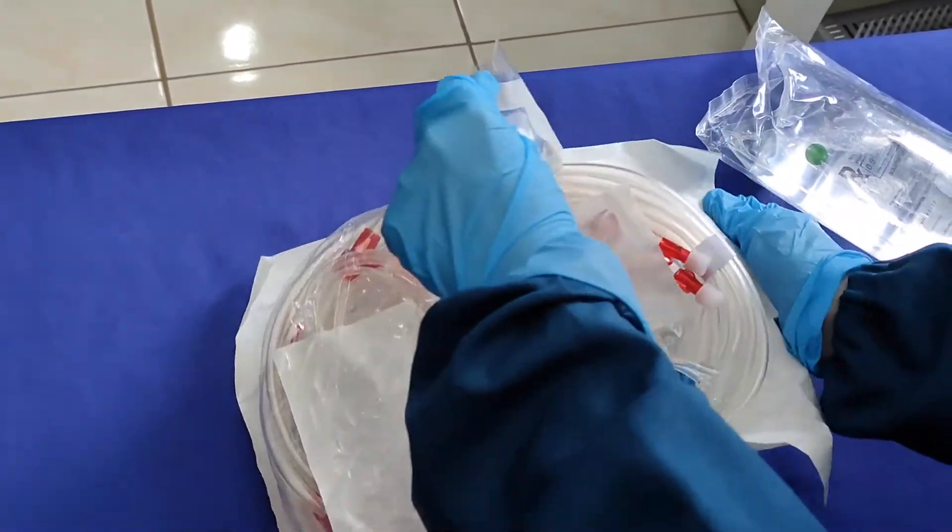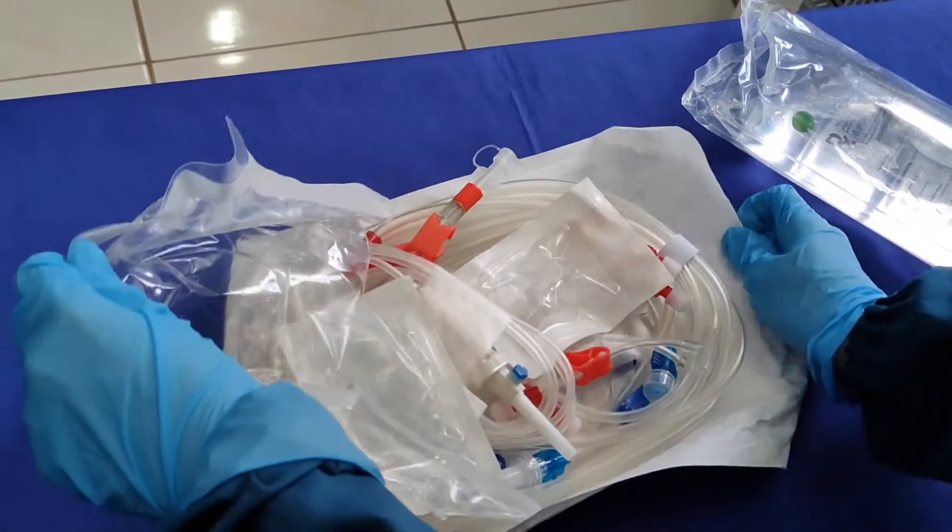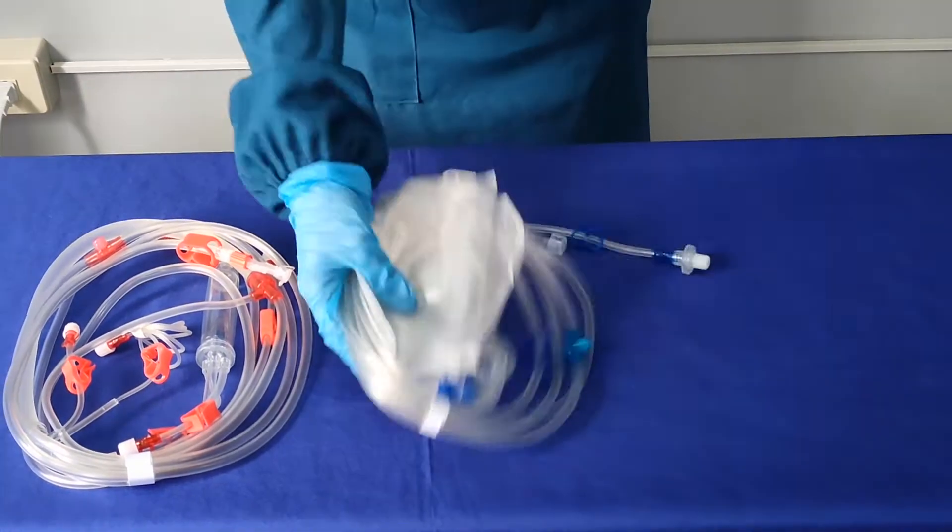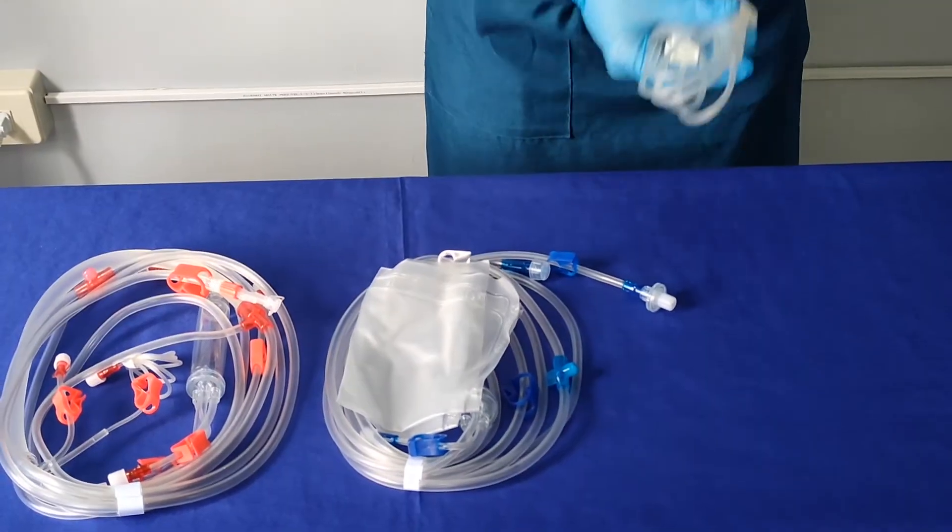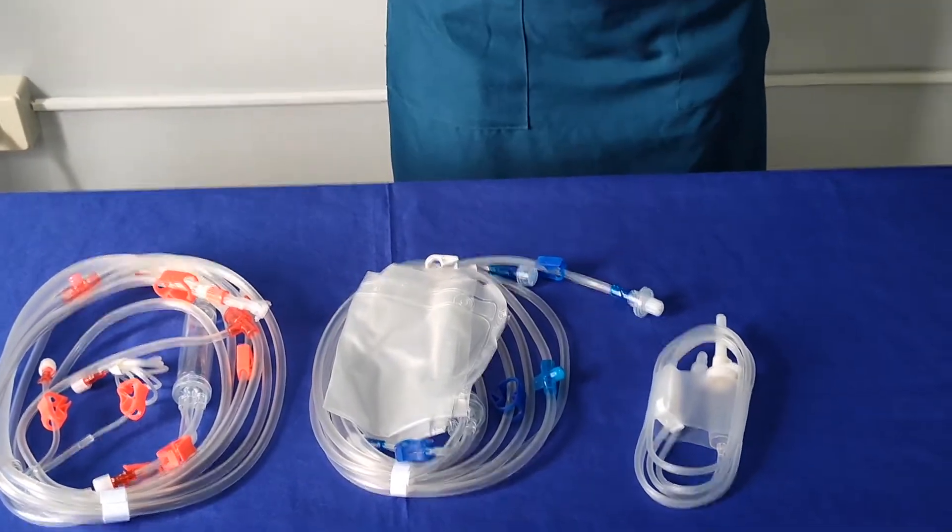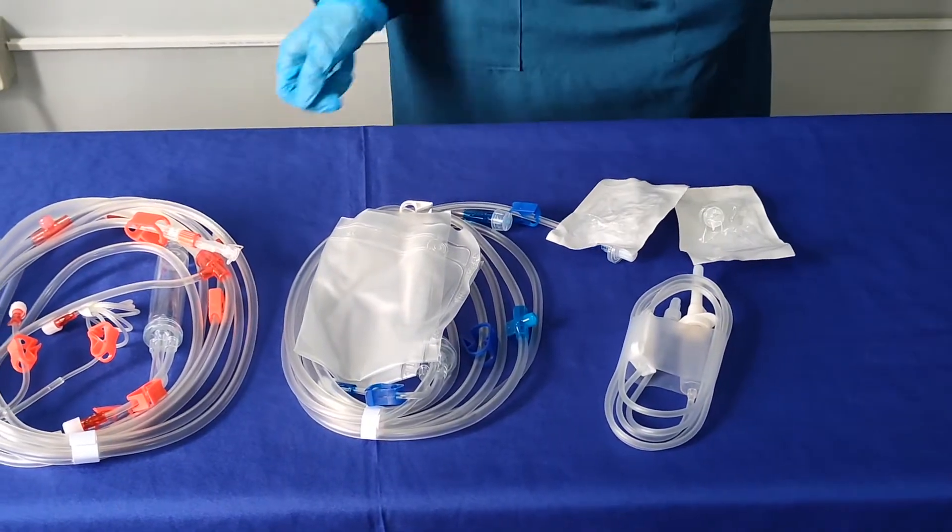The hemodialysis tubing set contains the arterial bloodlines, the venous bloodlines with drainage bag, the IV set for the NSS, and the transducer and connector.